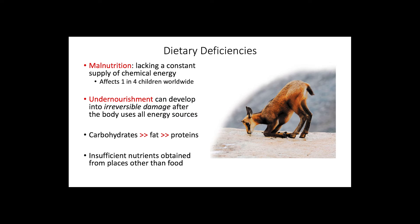Finally, we will talk about dietary deficiencies and define malnutrition as the lacking of a constant supply of chemical energy. Malnutrition actually affects 1 in 4 children around the world. This undernourishment has the potential to develop into irreversible physical damage, because under normal conditions the body obtains energy from carbohydrates and then from fat. In an undernourished individual, both carbohydrates and fat are lacking and the body starts breaking down proteins, which if untreated will result in death. When insufficient nutrients are found in an animal's diet, individuals will obtain them from unusual places — for example, some herbivores lick salt from rocks to obtain sufficient minerals that the plants they eat cannot supply.